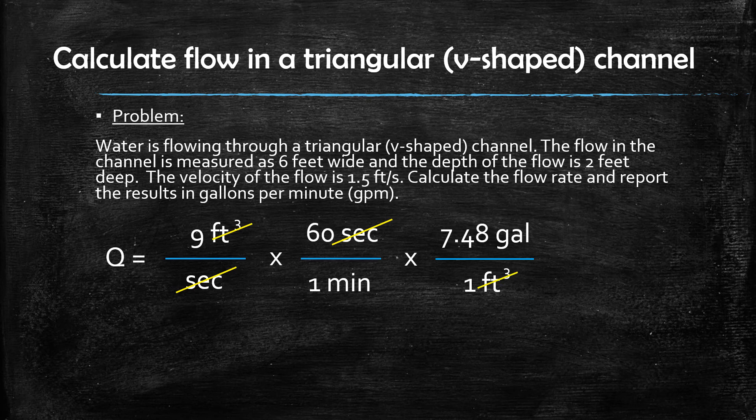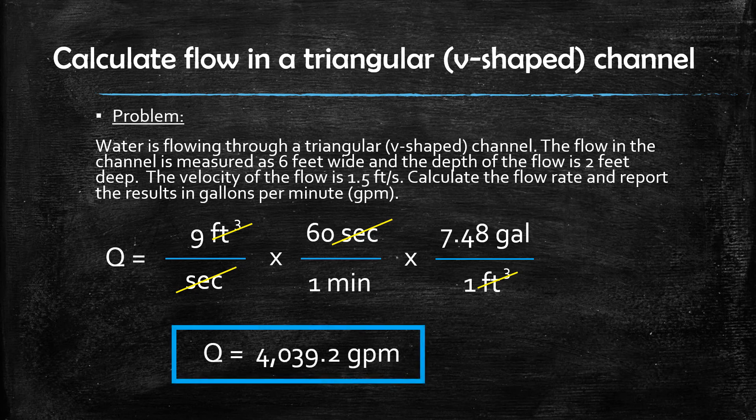The units of seconds will cancel out, the units of cubic feet will cancel out, and the final result is in gallons per minute. The final result for this problem is that the flow rate through the channel is 4039.2 gallons per minute.